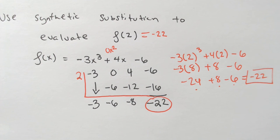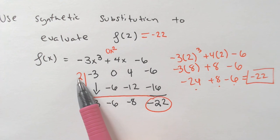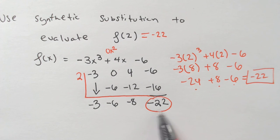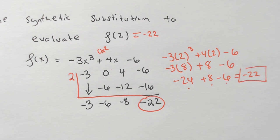But synthetic substitution is telling you something very important, and that is that the number you plugged in, if you were to get a remainder of 0, that tells you that it is a 0, which kind of connects with polynomials in general. But that synthetic substitution, it's a pretty easy one.